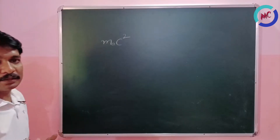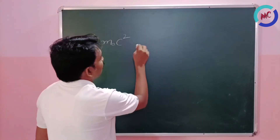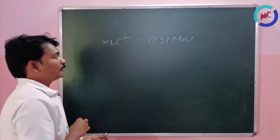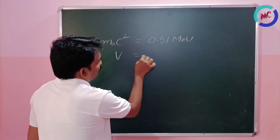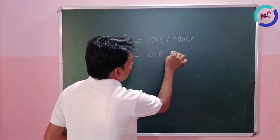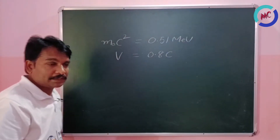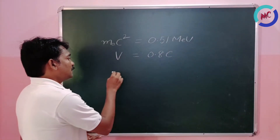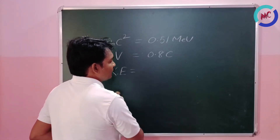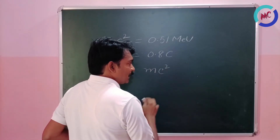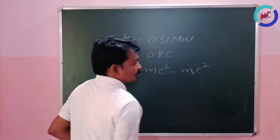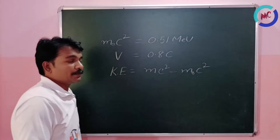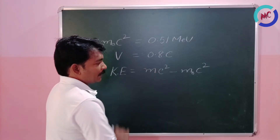The mass energy of an electron at rest is given as 0.51 mega electron volts. The velocity of the moving electron is given as 0.8c, where c is the velocity of light in vacuum. Using these two values, we are going to find the kinetic energy. The kinetic energy equals the mass energy of the moving electron minus the mass energy of the electron at rest. The value of m₀c² is 0.51 MeV.